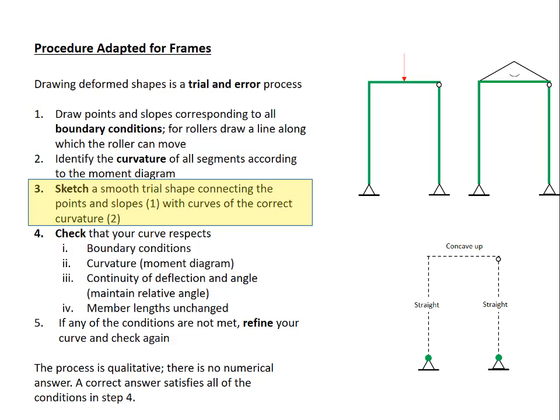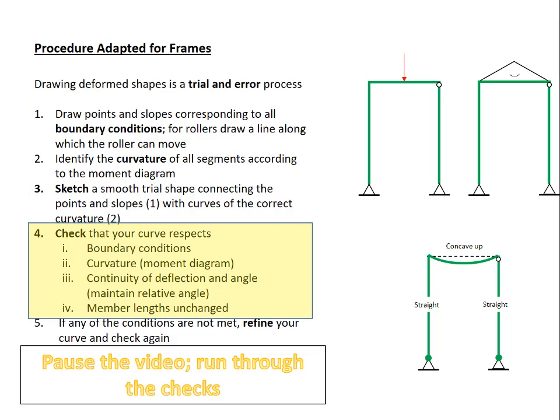Step 3, let's sketch a trial shape. Typically, when people are learning, they'll draw a concave up beam there, and straight members there. It seems obvious to me, right? Well, let's check. Before I run through the check, pause the video for a moment. Run through the checks yourself, and see if you can identify what is wrong with this shape.